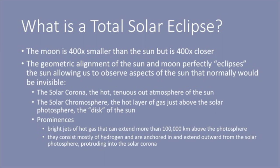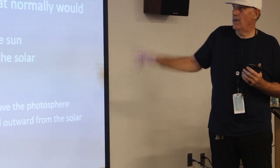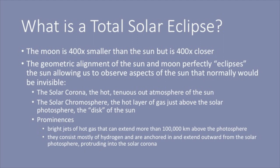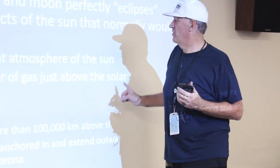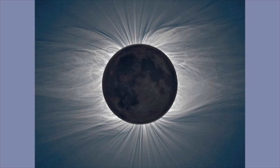What is a total solar eclipse? The moon is 400 times smaller than the sun but is 400 times closer. That geometrical alignment means the moon perfectly eclipses the sun, allowing us to observe aspects of the sun normally invisible — such as the solar corona, the hot tenuous outer atmosphere; the solar chromosphere, the hot layer of gas just above the photosphere; and prominences, bright jets of hot gas that can extend more than 100,000 kilometers into space, consisting mostly of hydrogen and a little helium, anchored to the photosphere.